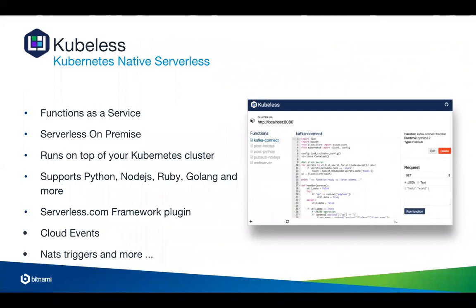Kubeless is what we call the Kubernetes-native serverless solution. It's one of our big projects at Bitnami — it's Function as a Service. If you want to do serverless on-prem, you can use Kubeless and deploy it inside your Kubernetes cluster. It supports Python, Node.js, Ruby, and Golang. Microsoft just released a new runtime for .NET support. We have a serverless plugin, we now support CloudEvents, and we have integration with NATS triggers.